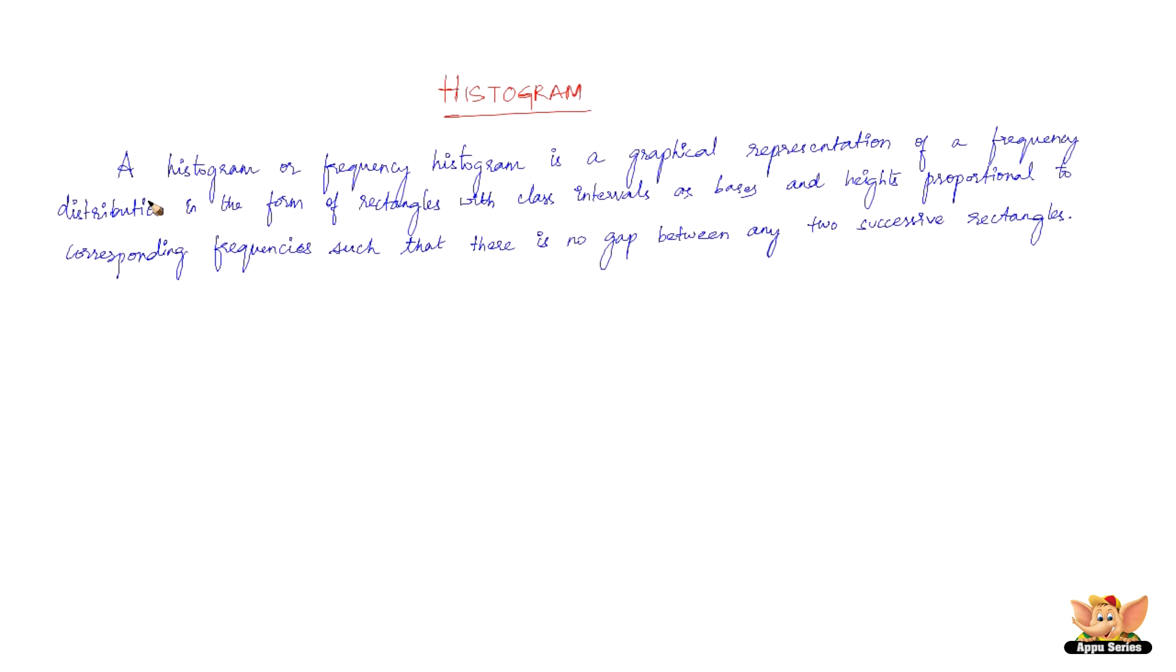So in this video let us look into what is a histogram. A histogram or frequency histogram is a graphical representation of a frequency distribution in the form of rectangles with class intervals as basis and heights proportional to corresponding frequencies such that there is no gap between any two successive rectangles.